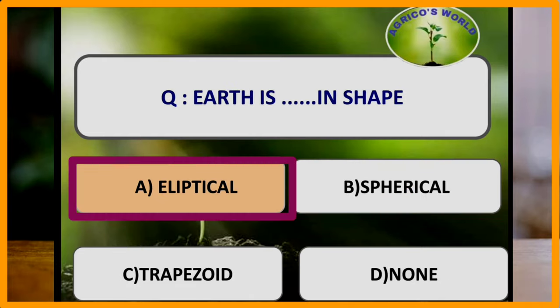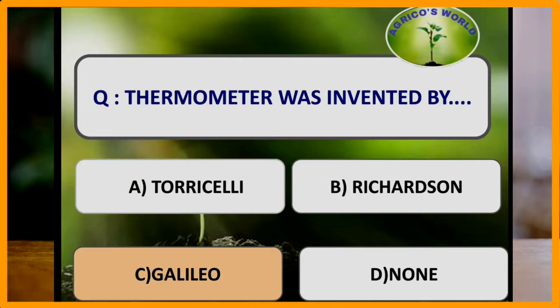Earth is elliptical in shape and it is flat at poles. Thermometer was invented by which of the following? Thermometer was invented by Galileo.